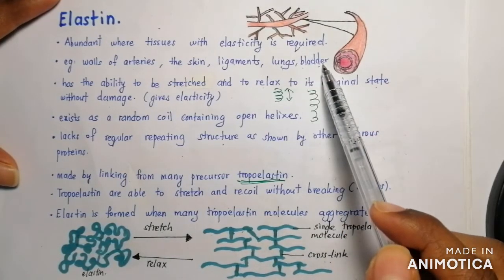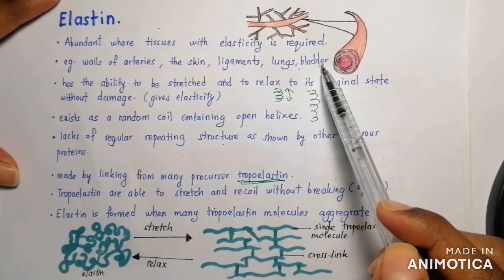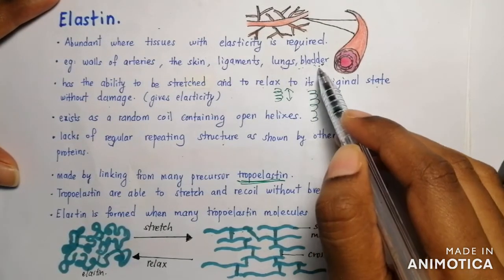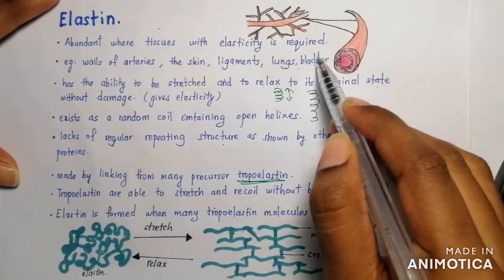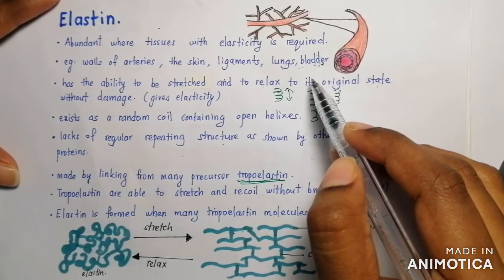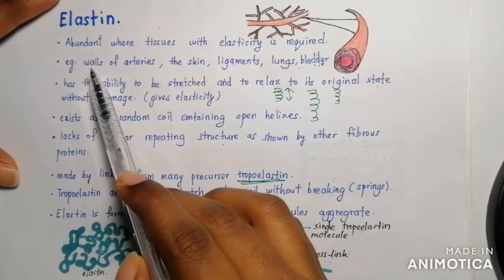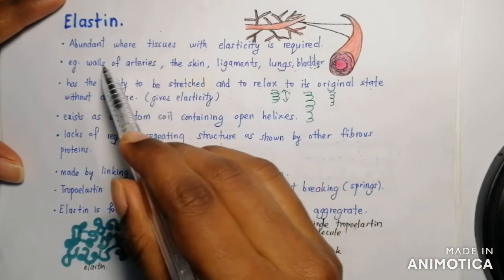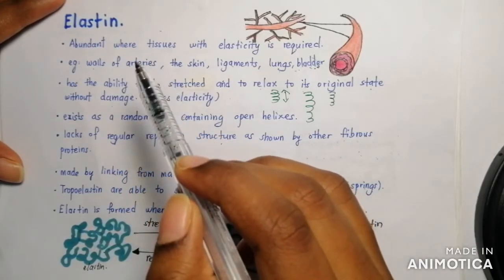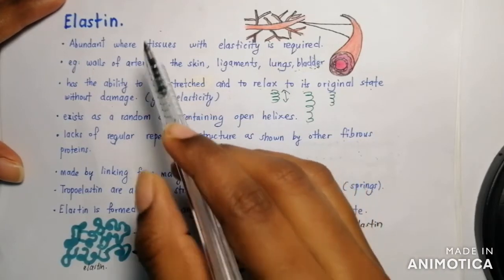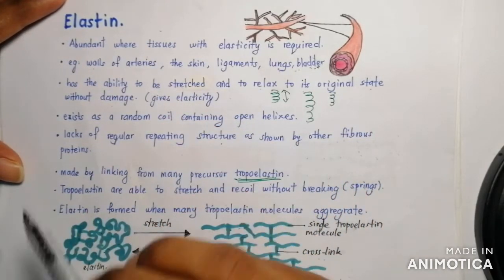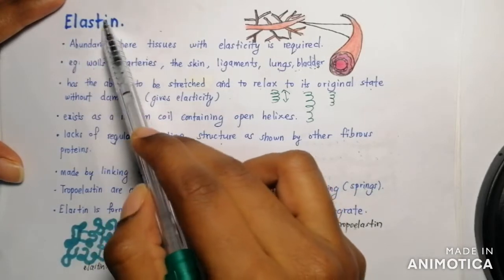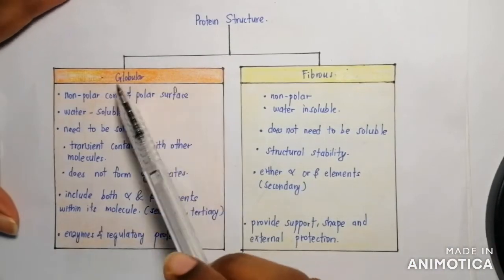Elastin is found in the bladder because the bladder stores urine — the more urine is stored, the more the bladder needs to stretch. Once the urine is excreted, the bladder relaxes back to its original state. Similarly, for the walls of arteries, the heart pumps blood at high pressure into the arteries, so the arterial walls need to stretch to withstand that blood pressure — therefore the walls of arteries need elastin.